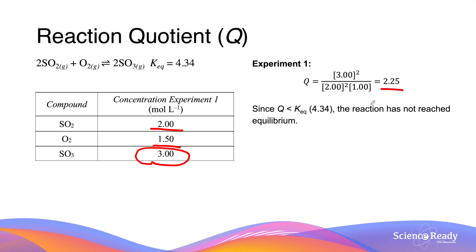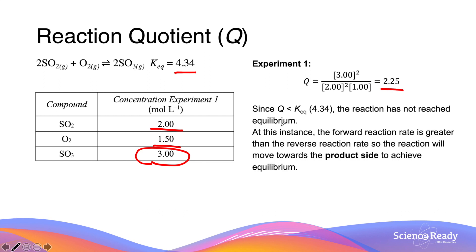By substituting these numbers into the quotient expression, we get a value of 2.25. Since this number is not equal to the equilibrium constant, which is 4.34, the reaction is not yet at equilibrium. In this experiment, since the quotient is smaller than Keq, the forward reaction rate is greater than the reverse reaction rate. So the reaction will move towards the product side in order to achieve equilibrium — meaning over time, the products will increase in concentration while the reactants will decrease until the reaction reaches equilibrium.